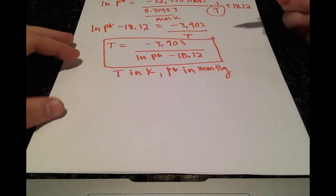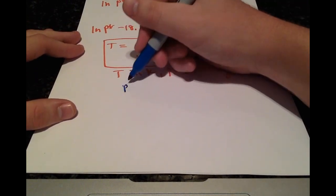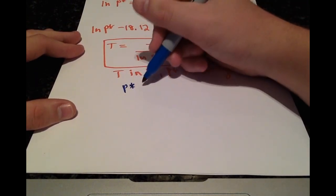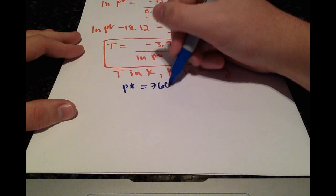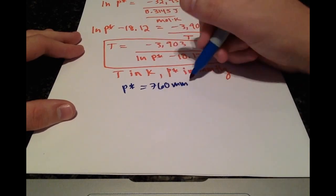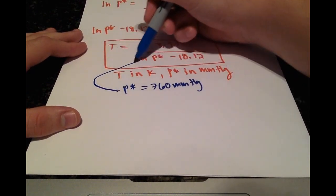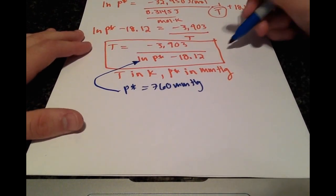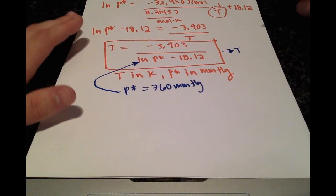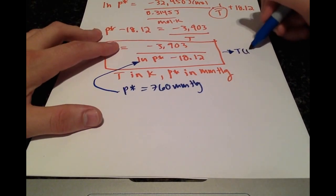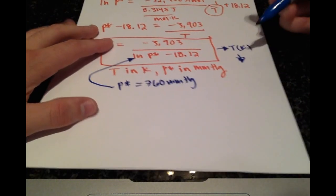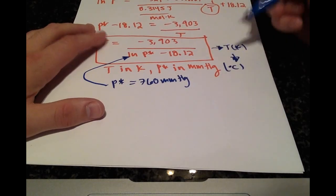For the second part of this problem, we're plugging in a vapor pressure value of 760 millimeters of mercury to see what temperature we get. This temperature will be in Kelvin, but the question asks for degrees Celsius.